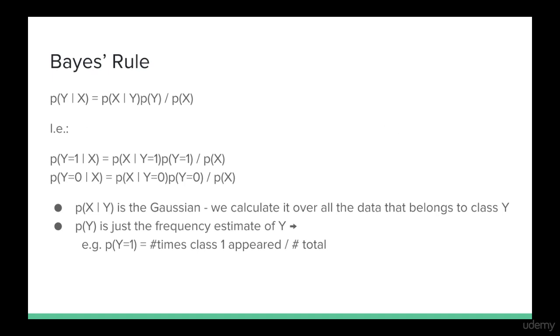This just says that the posterior, or p of y given x, is equal to the likelihood, which is p of x given y, times the prior, or p of y, divided by p of x.